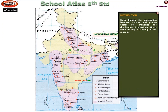Many factors like cooperation between nations and the private sector influence the distribution of industries. Study the index to Map 2 carefully in this respect.